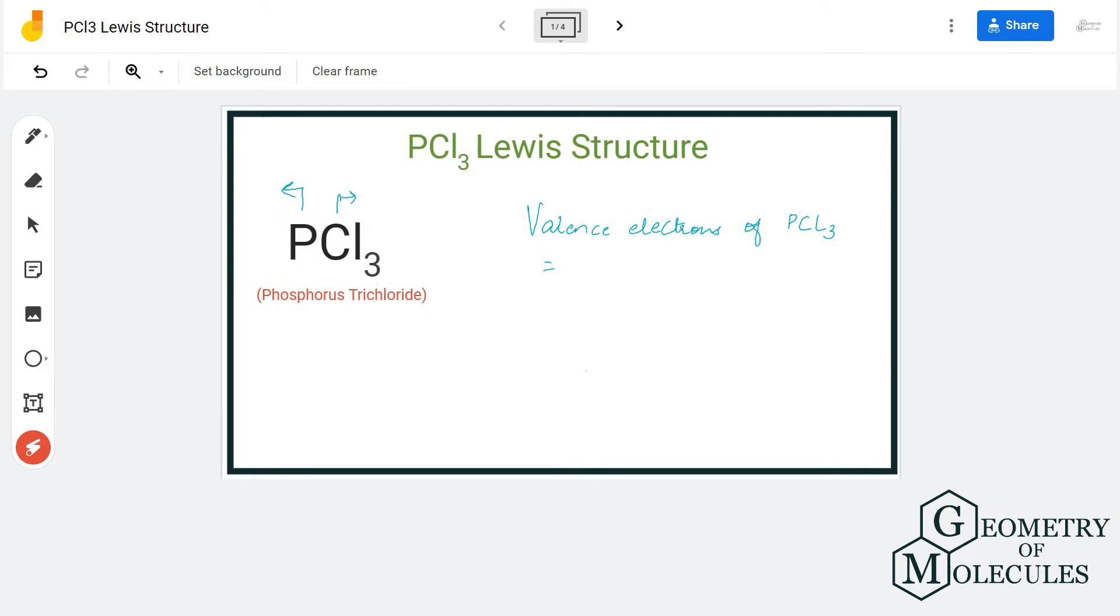To understand its Lewis structure we'll first look at the total number of valence electrons for this molecule. Phosphorus has five valence electrons in its outer shell and chlorine atom has seven valence electrons in its outer shell, but as there are three of them here we multiply this number by three. So in total we have 26 valence electrons for PCl3.